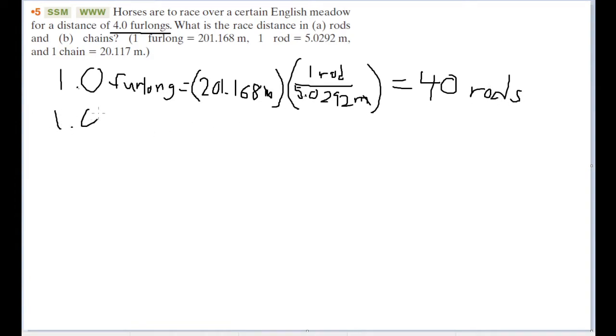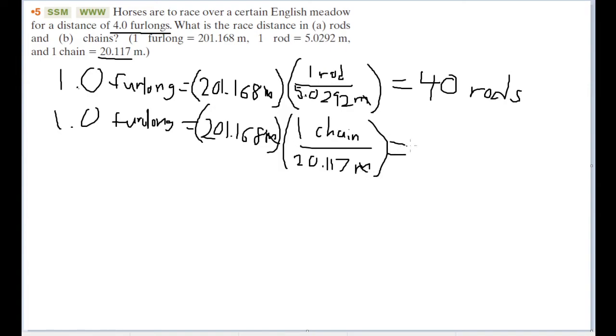And now let's do the same thing with chains. One furlong is going to be equal to that same number of meters times the conversion factor from chains. So that is one chain over, and it's given here as 20.117 meters. Units cancel out of course, and that is about 10 chains.